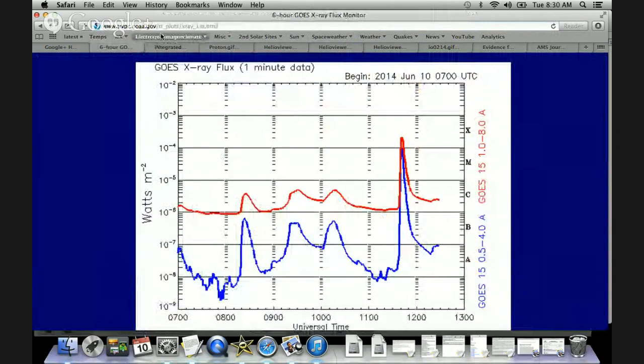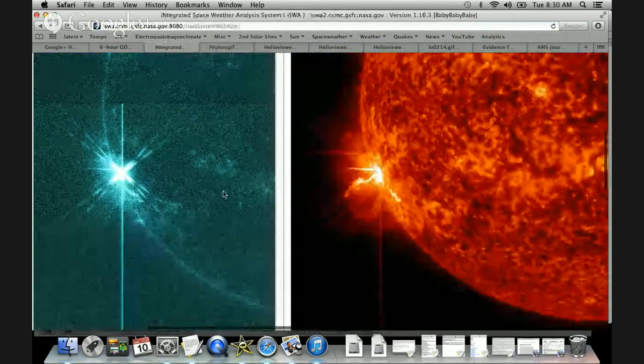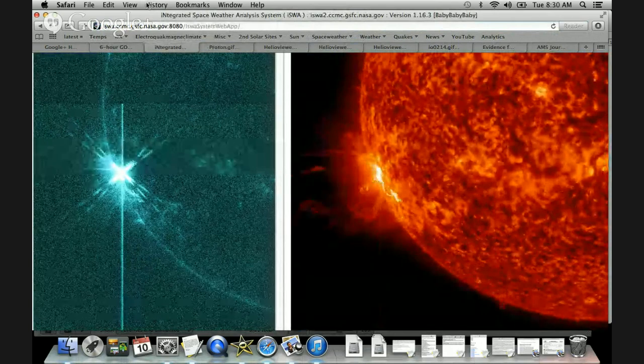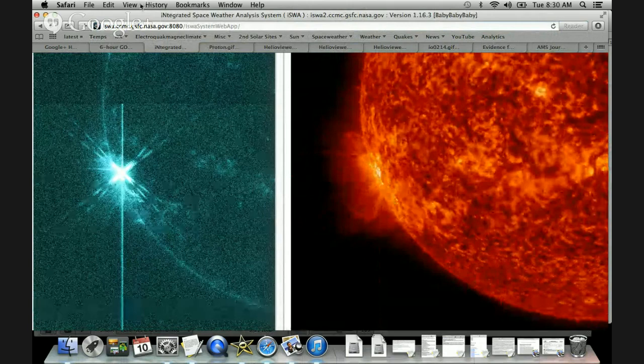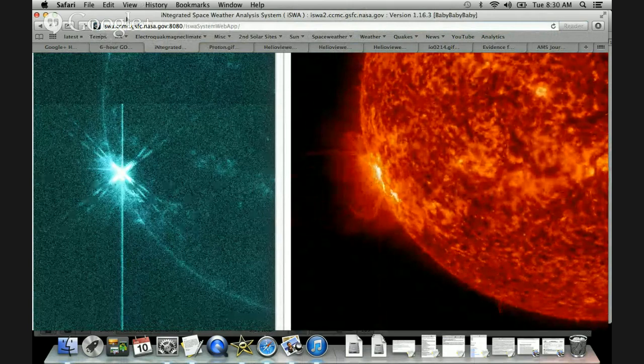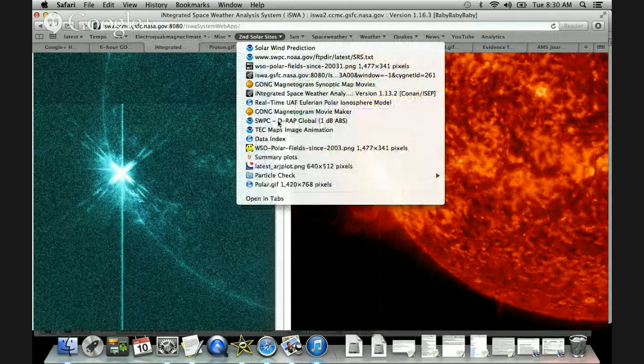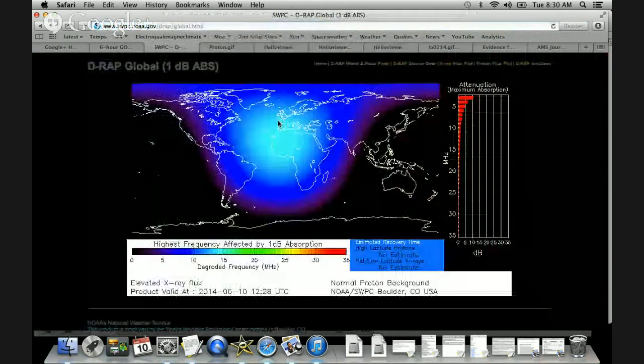As we said earlier, because they came off of the limb, because it came off the limb, it is not going to be Earth-directed. We probably shouldn't expect any CME impact or geomagnetic storms. The radio blackout event is pretty much over at this point. You know, you can see these subside as soon as the flare does.